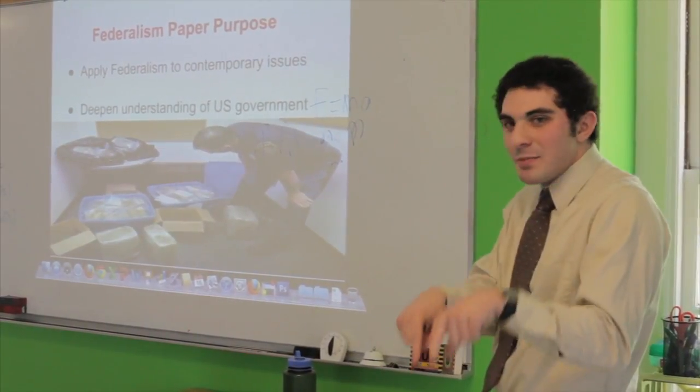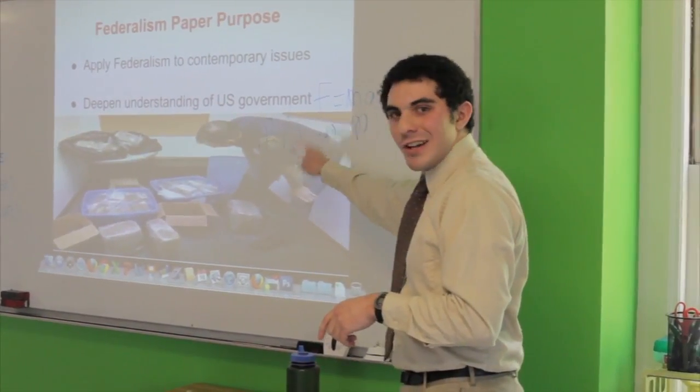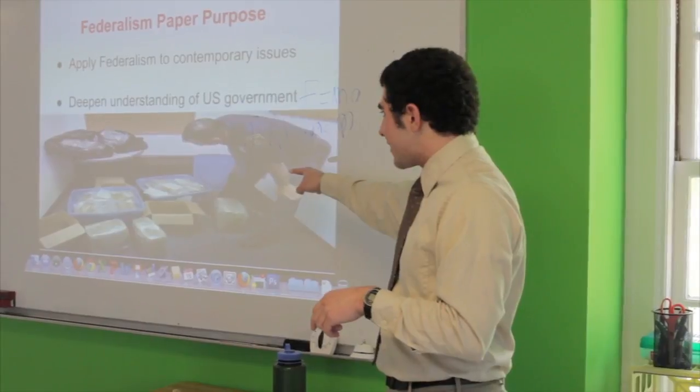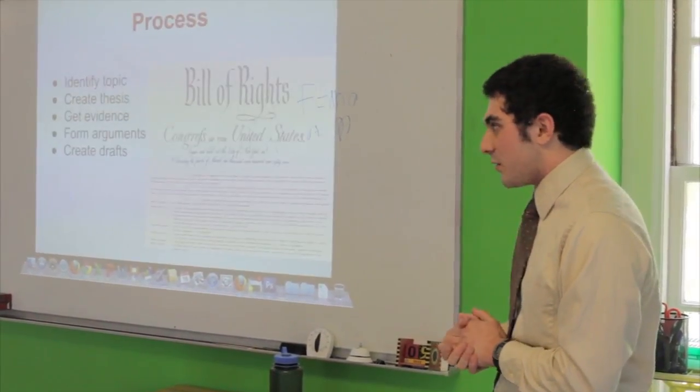So even though you might be protected in California, agents like this guy still have the right to come in there and arrest you. Because even though you may be protected by the state, you may not be protected by the national government. So that's just an implication of federalism.